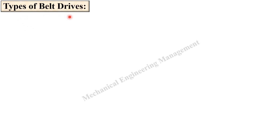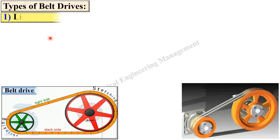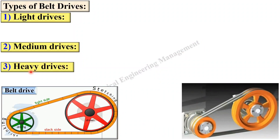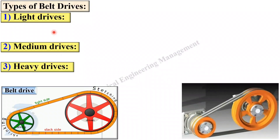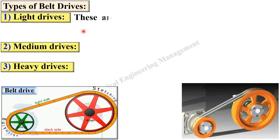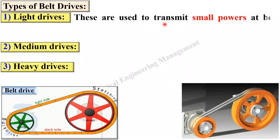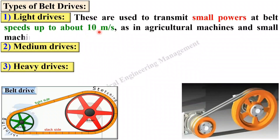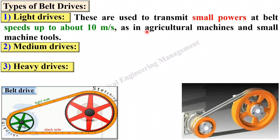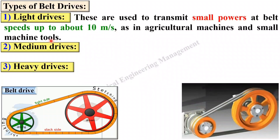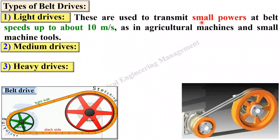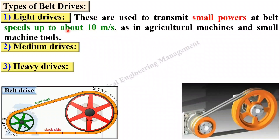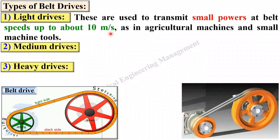Now, types of belt drives. Basically there are three types: light drives, medium drives, and heavy drives. Light drives are used to transmit small powers at belt speed up to 10 meters per second, as in agricultural machines and small machine tools.